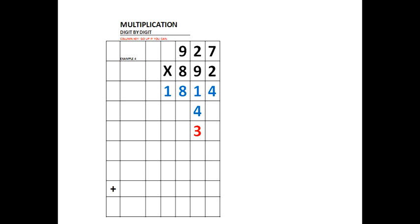Now we're going to do 9 times 927. We will start the products in the 10's column because in 892, 9 is in the 10's column. We see the 6 with the 63 — it's in the next column to the left of 3, and it went up as high as it could go. The 8 is from 9 times 2 is 18, and the 1 is in the next column to the left of 8, up as high as it could go. Now, 9 times 9 is 81 — there's the 1, and there's the 8, which is up as high as it could go.